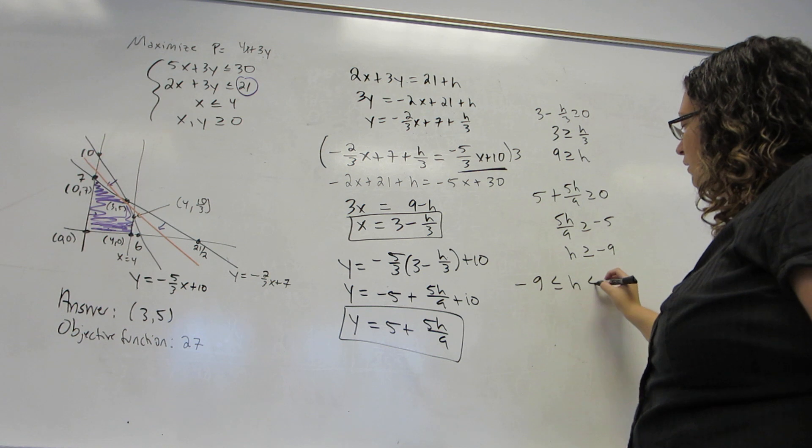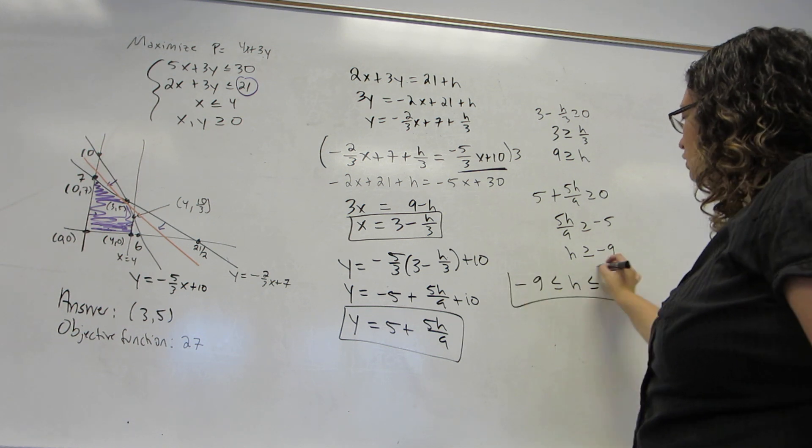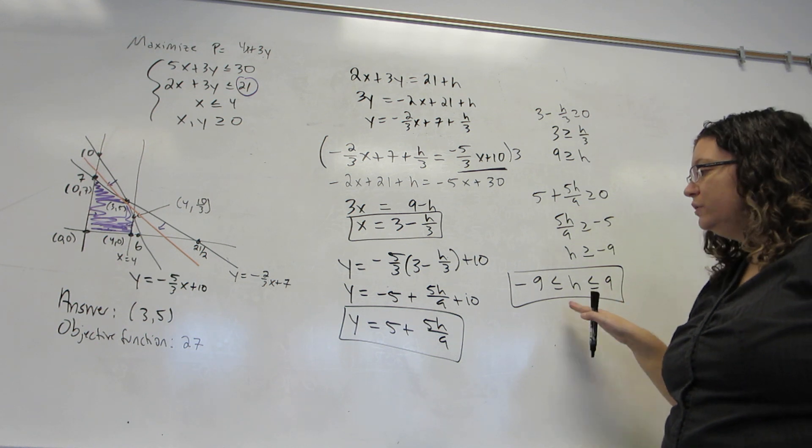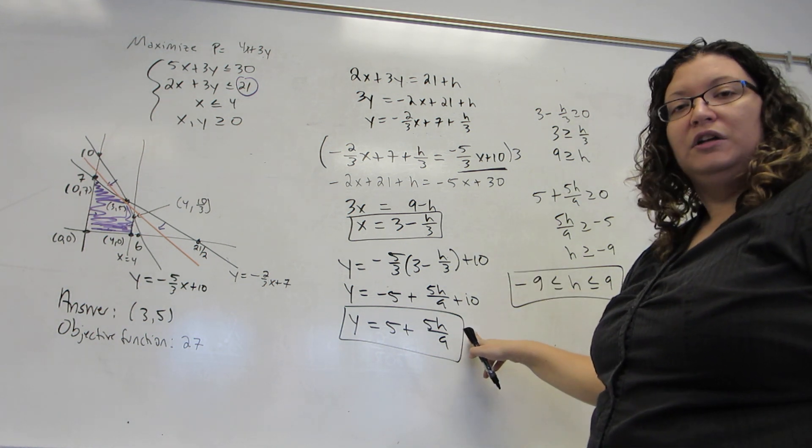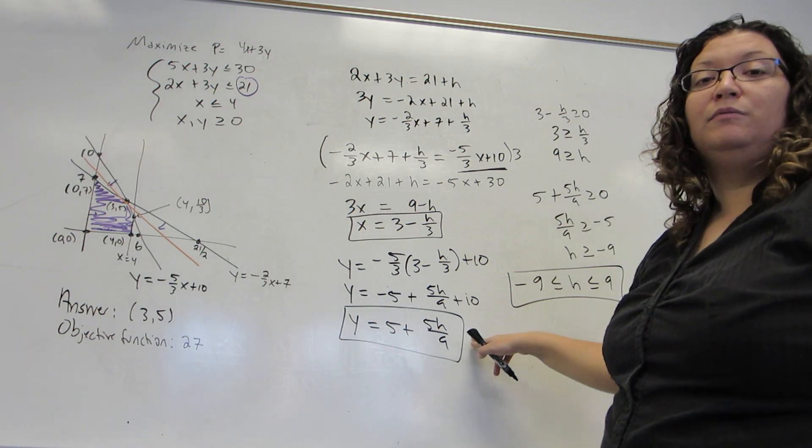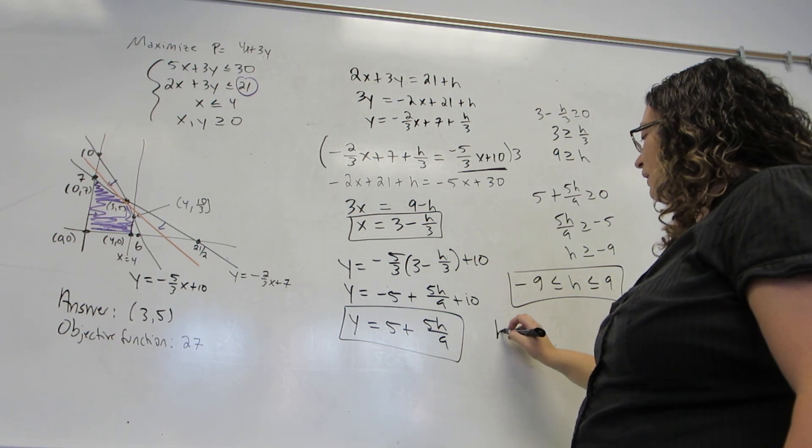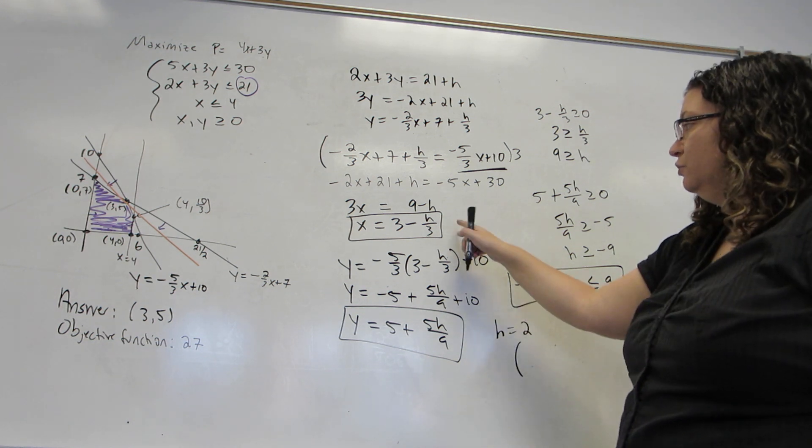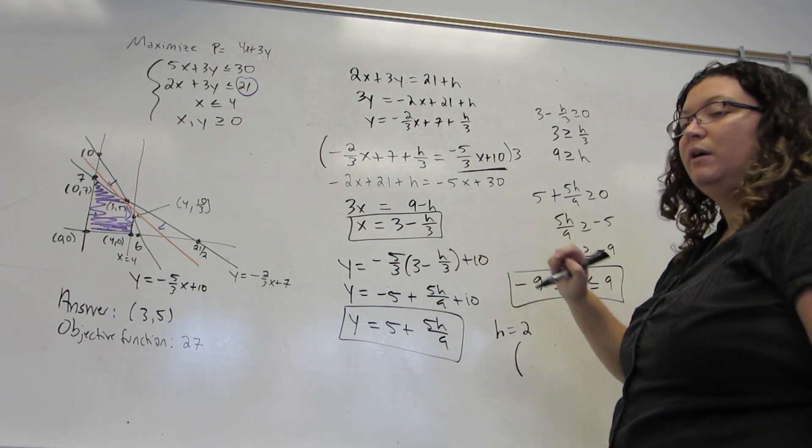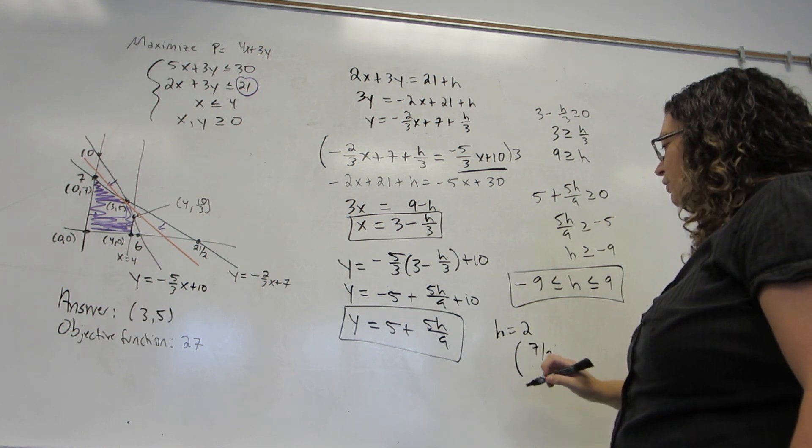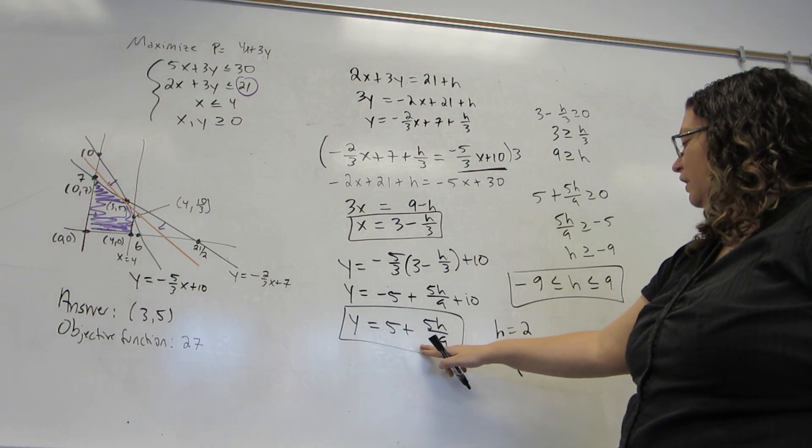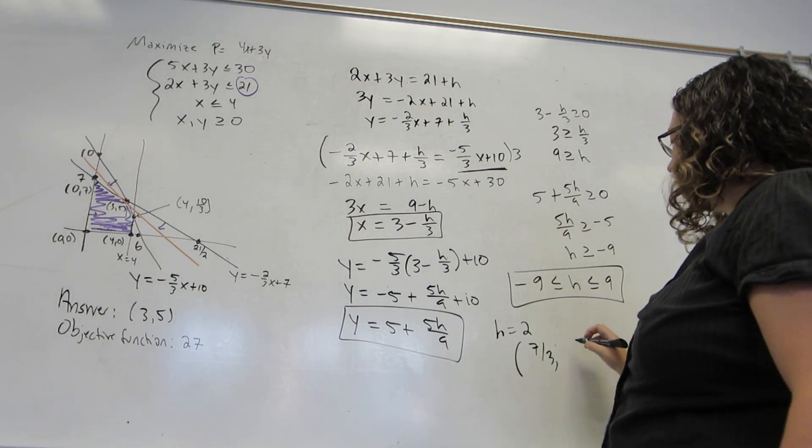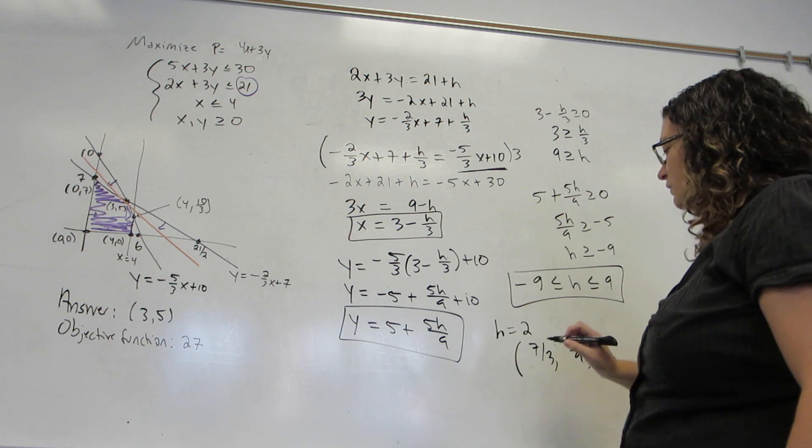In total, I am allowed to change that 21 by any number between negative 9 and 9. When I do so, I can plug that H value in and find my new optimal solution. So, for example, if I could use H equals 2, my new optimal solution will be 3 minus 2 thirds, which is 7 thirds, comma 5 plus 10 ninths, which is 55 ninths.